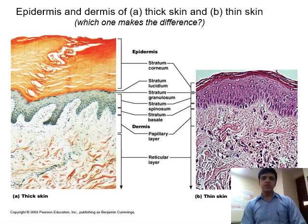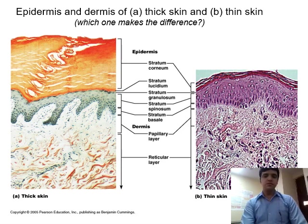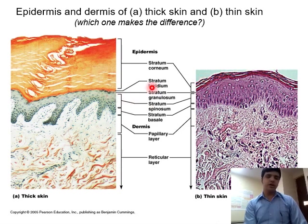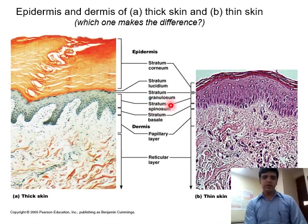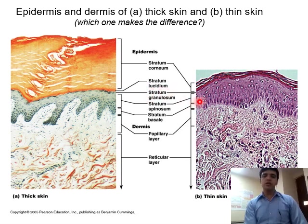This is the diagrammatic representation of thick and thin skin. In both, the reticular layer is at the bottom, then the papillary layer, and above that the epidermal layers. The layers from deepest to outermost are: stratum basale, stratum spinosum, stratum granulosum, stratum lucidum, and stratum corneum. The only difference is that thick skin contains the stratum lucidum layer, while in thin skin it is absent.